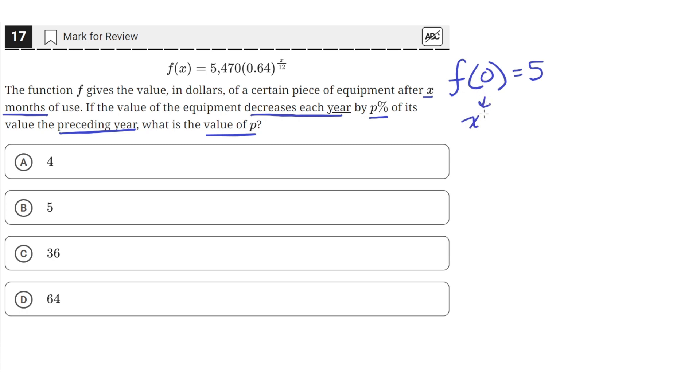So x is 0. So we'll just have 5,470 times 0.64 raised to the 0 power, because 0 divided by 12 is just 0. And so this just equals 5,470. Since 0.64 raised to the 0 power is just 1, and 1 times 5,470 is just 5,470.